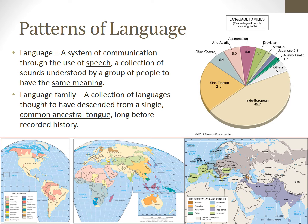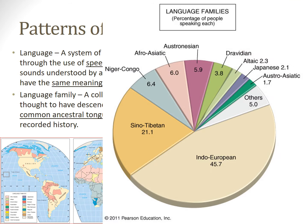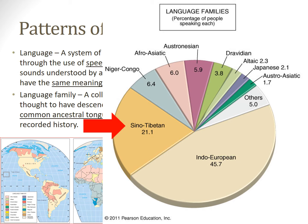So let's look at the data. The largest language family is Indo-European, with nearly half the world's people speaking one of its many languages. The second largest is Sino-Tibetan, driven by the most commonly spoken first language in the world, Mandarin Chinese. In fact, the nine largest language families represent 95% of all people.